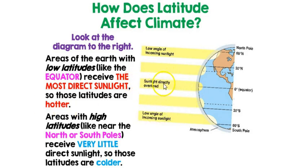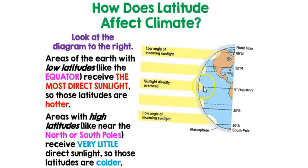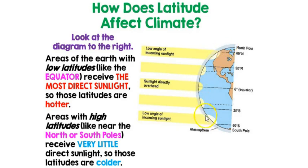It's simply a matter of which areas receive the most direct sunlight. The equator receives the most direct sunlight, so it is sizzling hot near the equator. But as you go into higher latitudes — both north and south — you get less direct sunlight, and so it gets colder.